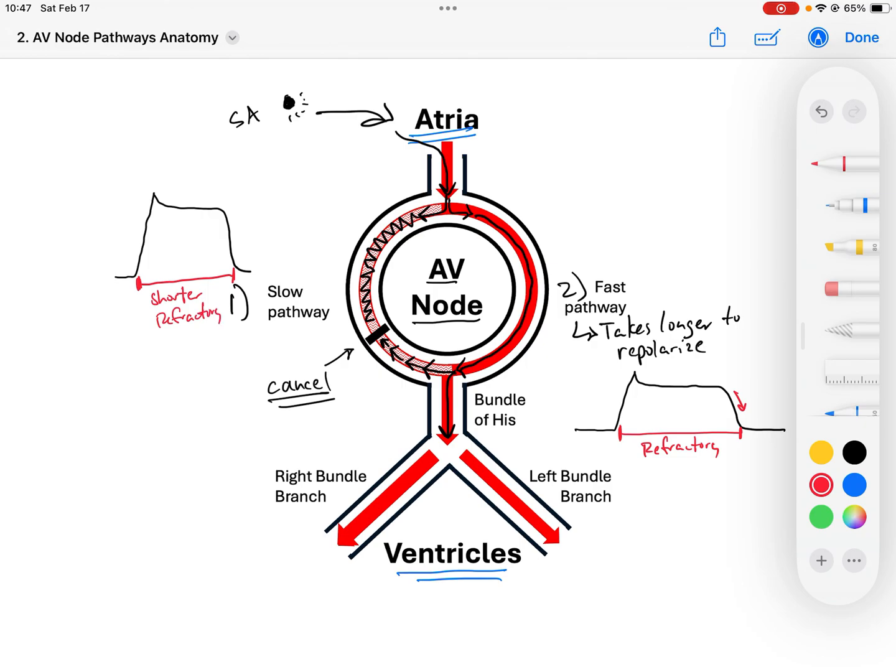And so then what I can do is if I overlaid my slow pathway action potential over my fast pathway, and I did it in blue, my slow pathway, excuse me, the action potential would look like this. And then you see it ends earlier, right? So the blue is my slow pathway. Black is my fast pathway.